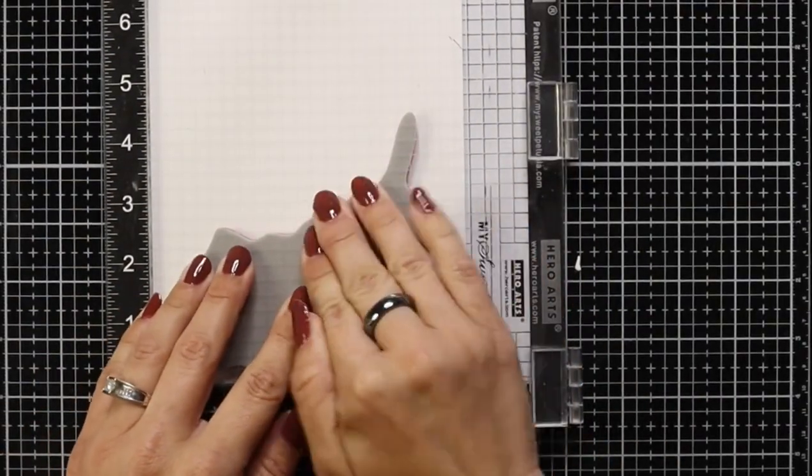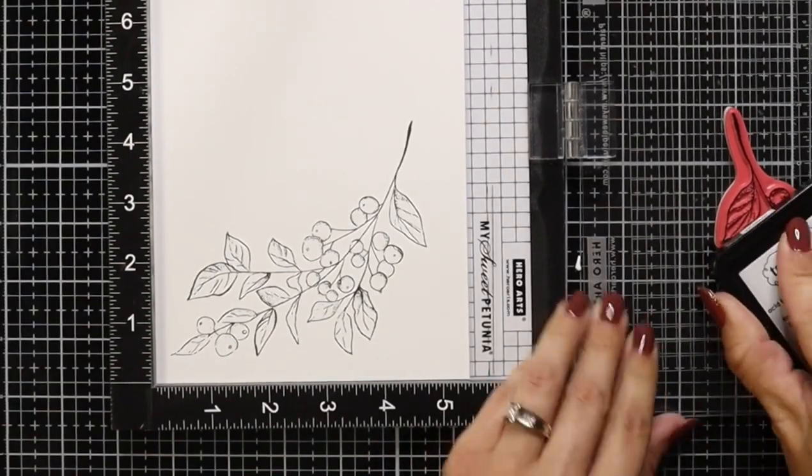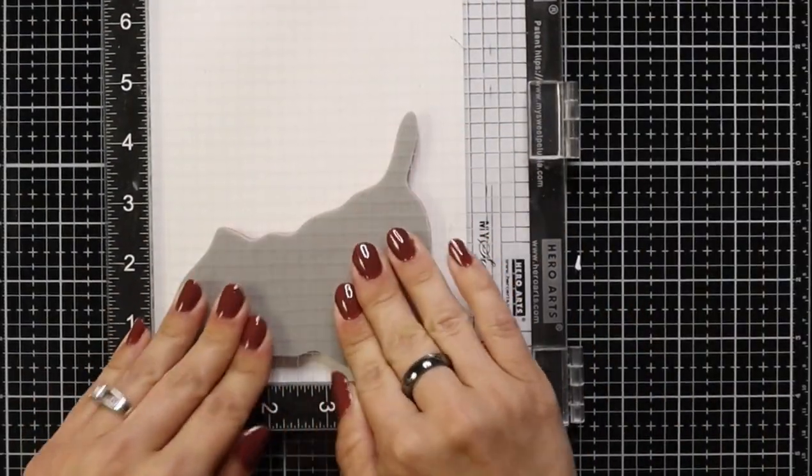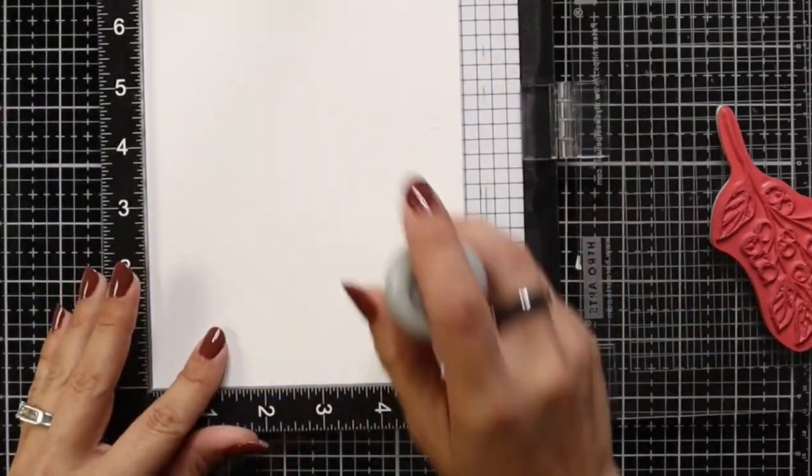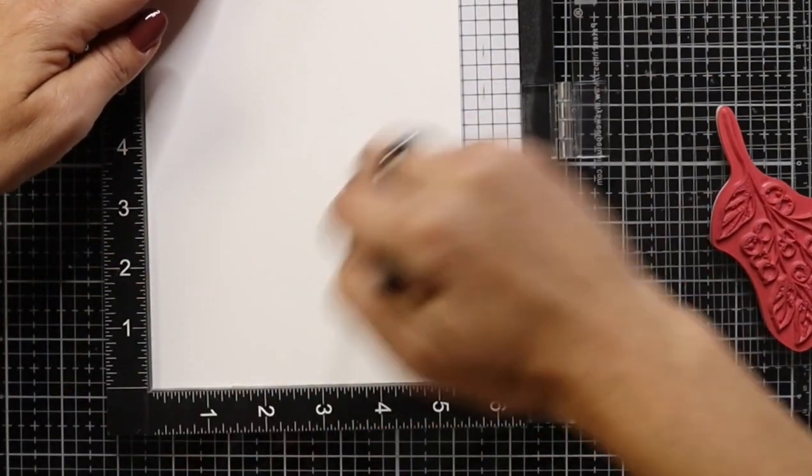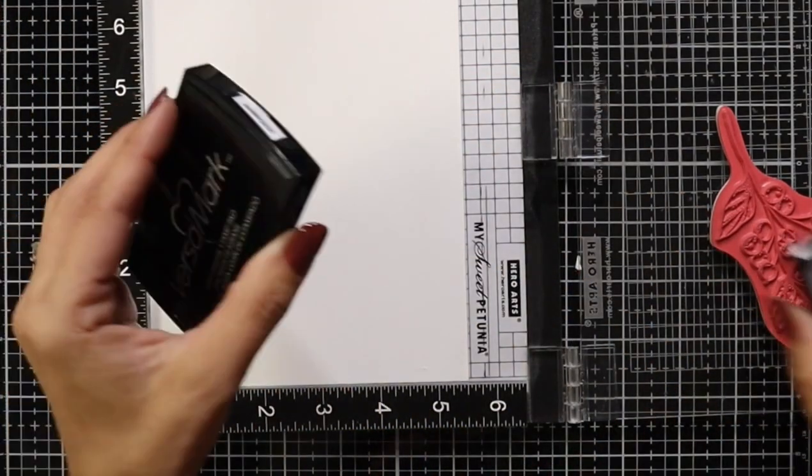So I did stamp this in Oreo ink using my Misti tool and I'm going to stamp a bunch of these off screen. Since I already have it lined up, it is very easy to just go ahead, switch out my cardstock and stamp them.